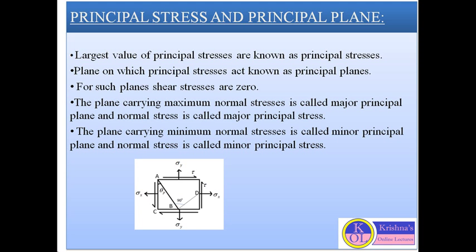Generally, at any point in a strained material under a three-dimensional stress system, there are three such planes which are mutually perpendicular to each other, carrying direct stresses and no shear stresses. However, here we are considering only the case of plane stress or a two-dimensional stress system, where the third principal stress is zero.